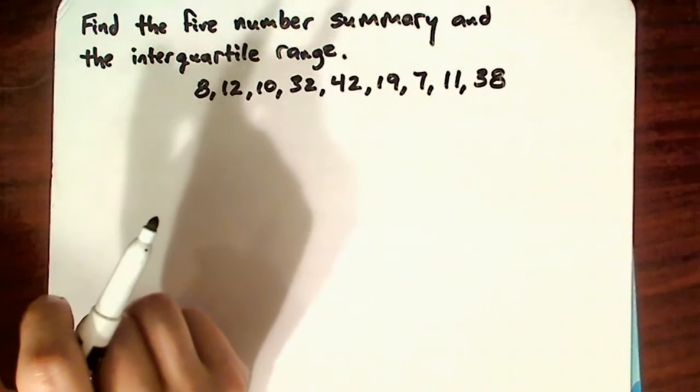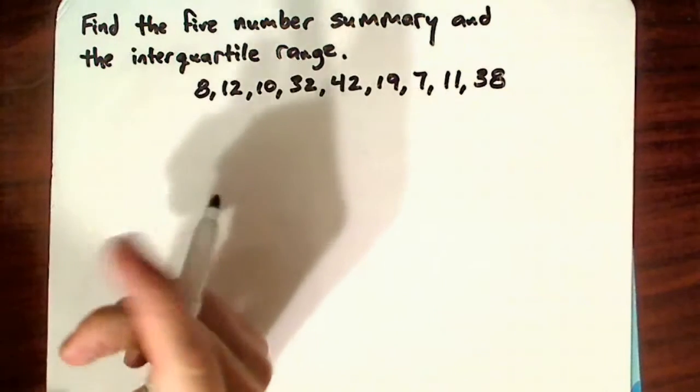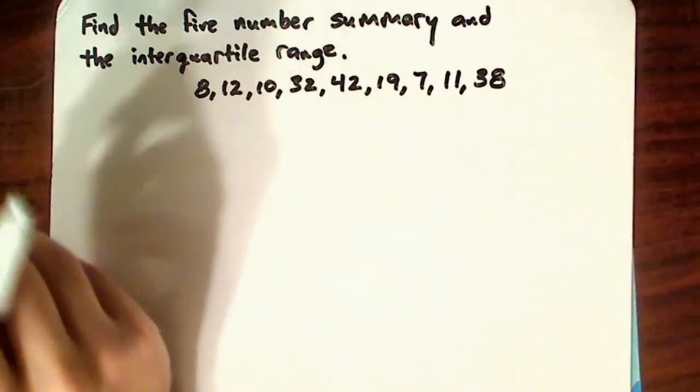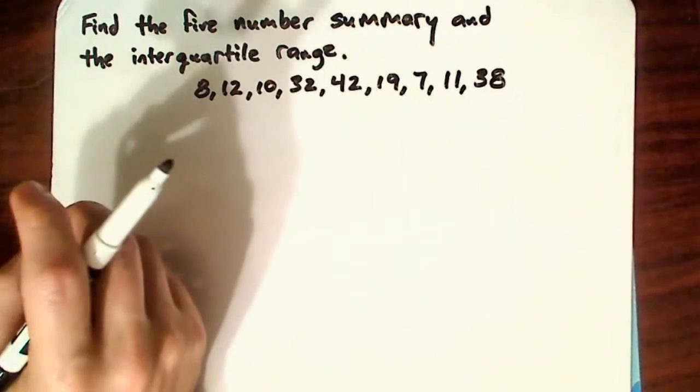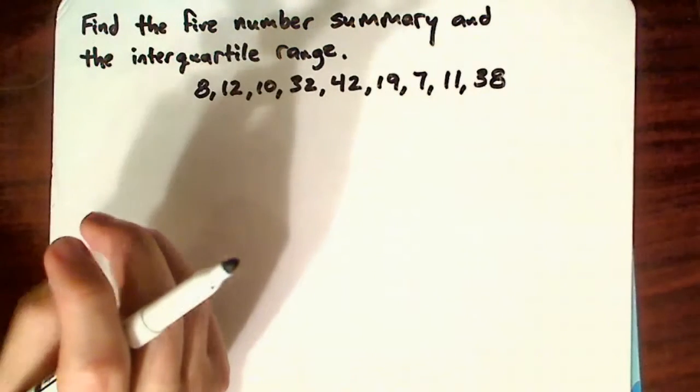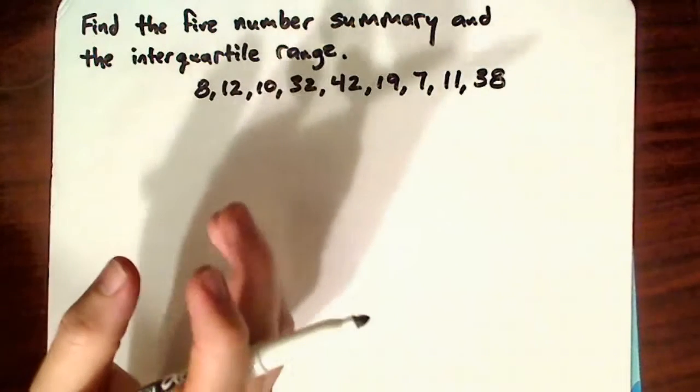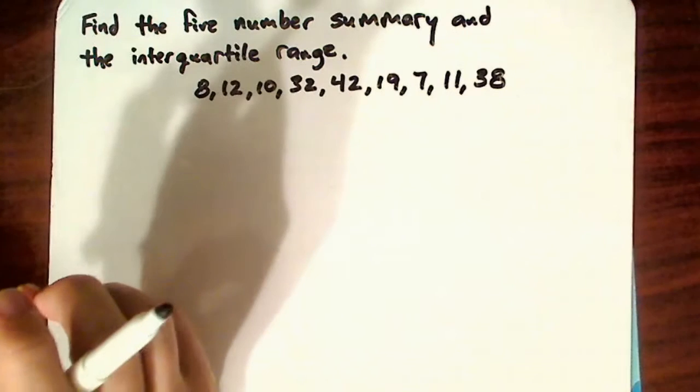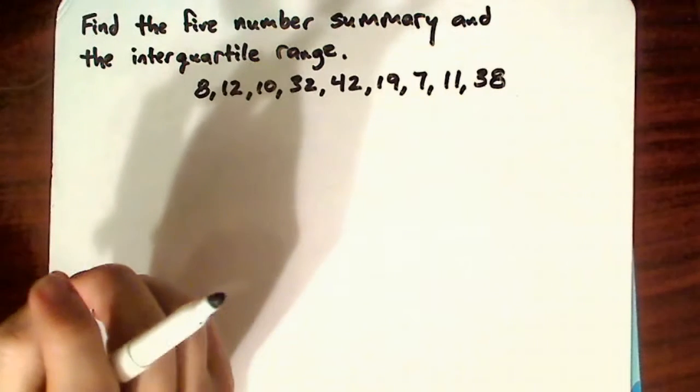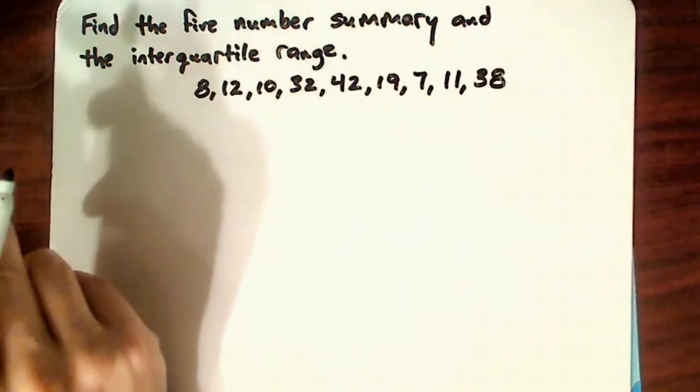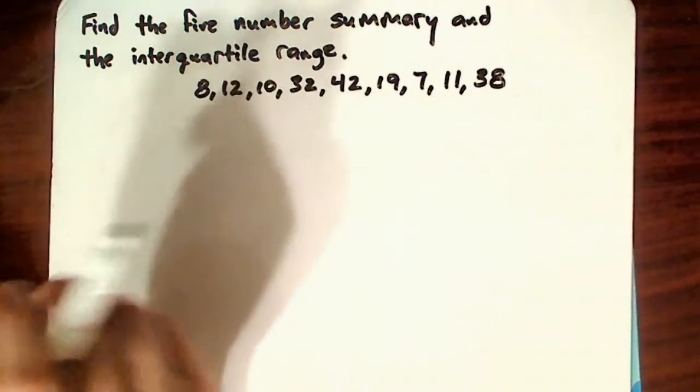Okay, with the five-number summary, a five-number summary includes the low, the first quartile, the second quartile, which is also the median, the third quartile, and the high. The interquartile range is the third quartile minus the first quartile.